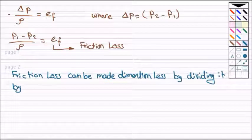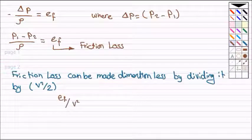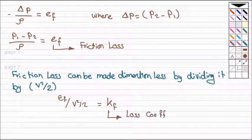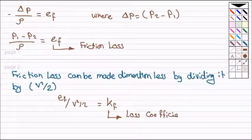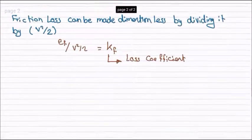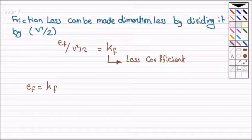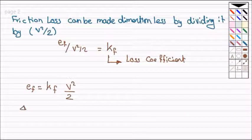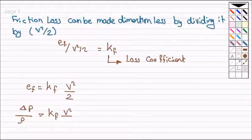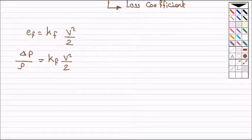ef by kinetic energy per unit mass, v squared divided by 2, so I can get kf loss coefficient. So we can say ef will equal to loss coefficient kf multiplied by the kinetic energy per unit mass, v squared by 2. We said before that delta p divided by rho is also equal to ef, so equal to kf v squared divided by 2.